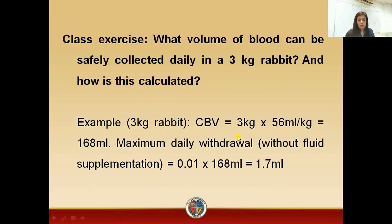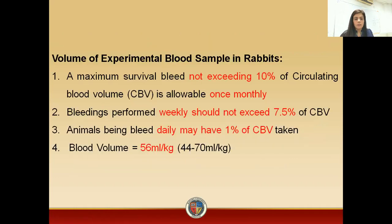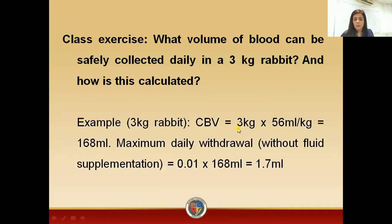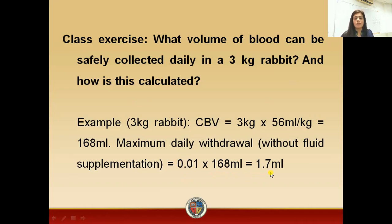Now, we have a rabbit with a weight of 3 kg. And 1 kg rabbit contains a blood volume of 56 ml. So, the blood volume in a rabbit is 56 ml per kg. You will multiply 3 kg by 56, then you will get the blood volume in a 3 kg rabbit, which will be 168 ml. Now, the maximum blood you can withdraw is only 1%, so you will multiply 1/100 by 168 ml.